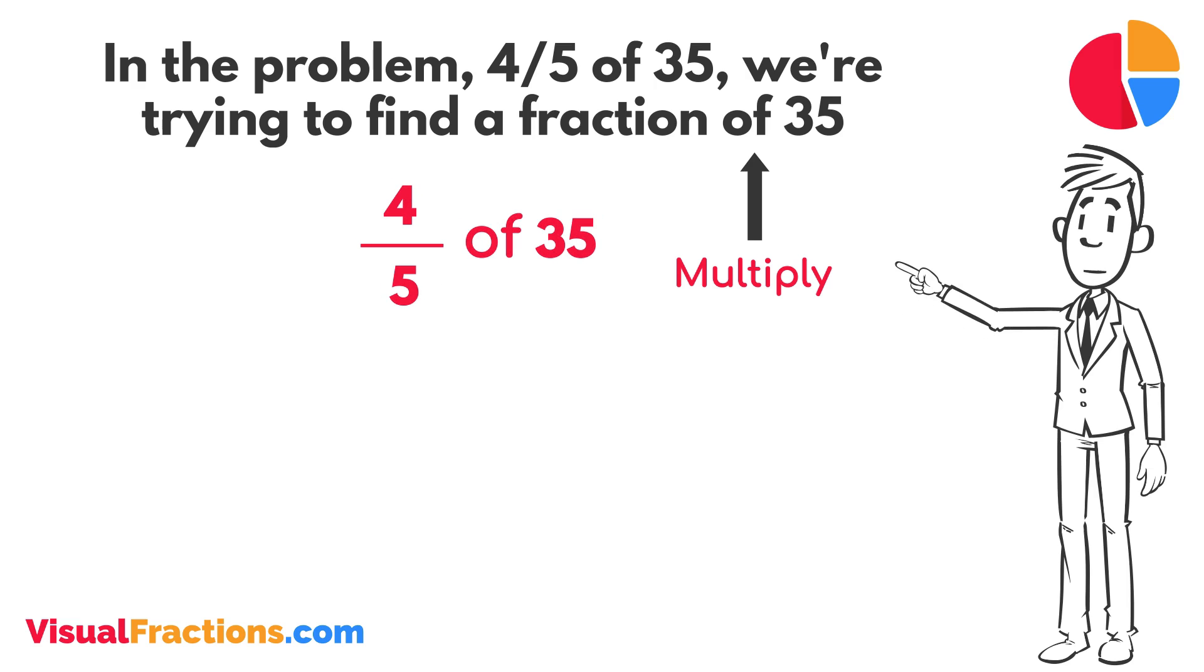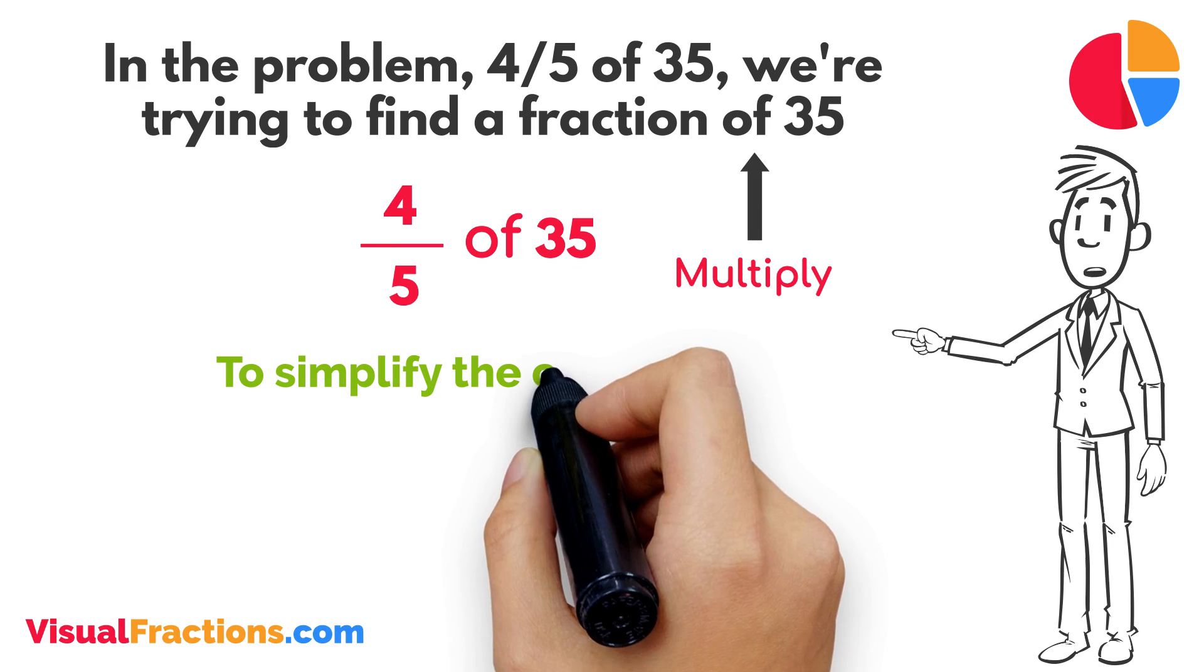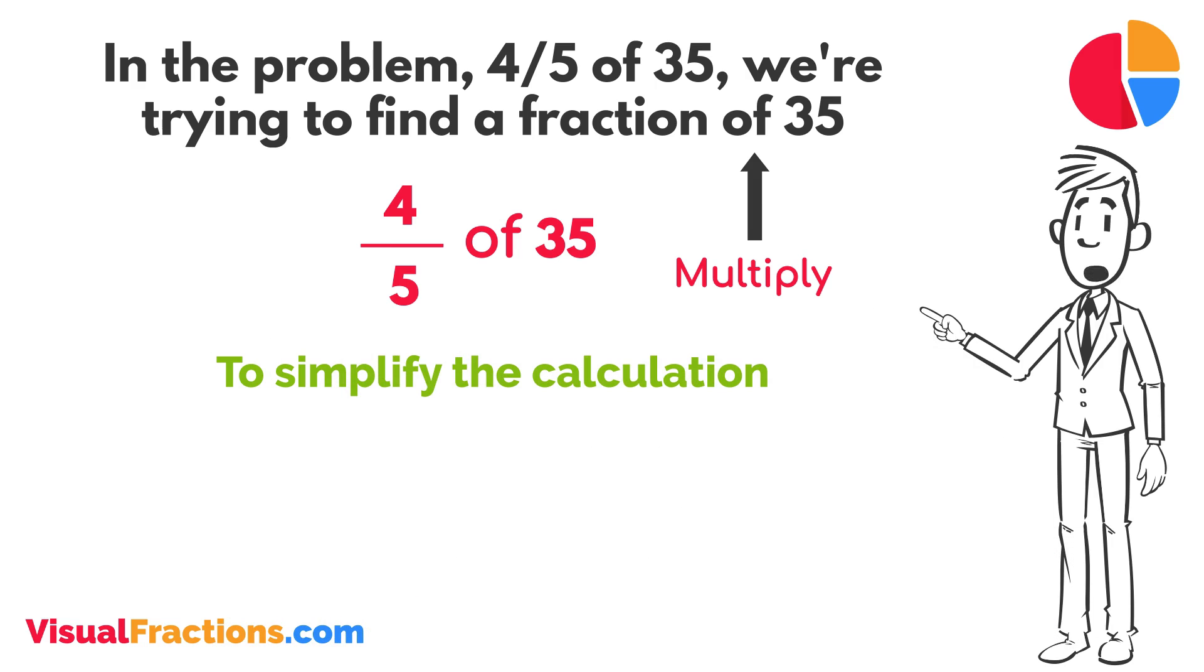To simplify the calculation, we first convert our whole number into fraction form, writing 35 as 35 over 1. This transformation makes it easier to work with our numbers as fractions.